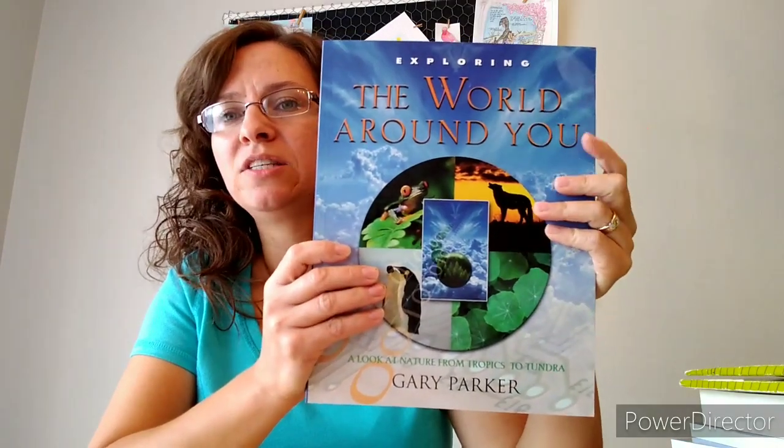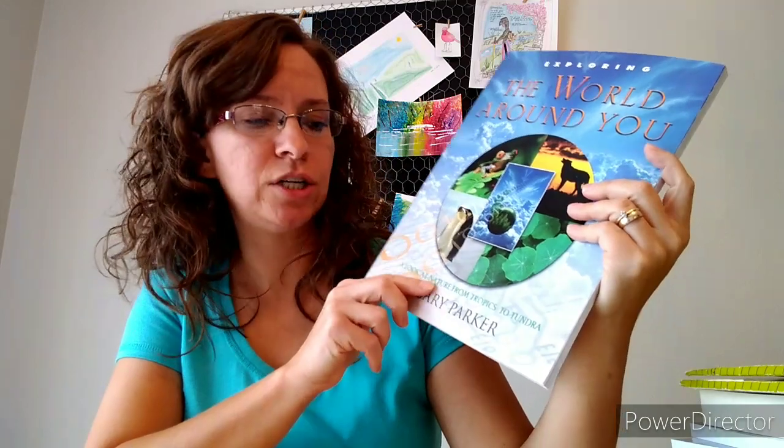For her science she's going to be doing Easy Peasy zoology, the fifth through eighth grade level. She's done 20 something lessons already and she likes it, but as of right now I think it's too easy for her. It's very basic and just too easy right now. It may get harder as the year goes on, and I'm sure it will because the rest of Easy Peasy does. But in case it doesn't, I got this book to supplement it. This is The World Around You, a look at nature from the tropics to the tundra, written by Gary Parker.